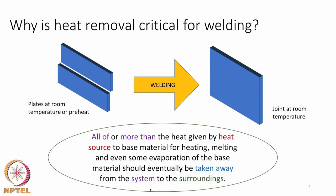We define what is the system and surroundings. The schematic shows a typical TIG setup — the parts shown in red are referred to as the system, basically the weldment, the plates being joined. Everything else is in the surroundings. System is also referred to as domain, and the surroundings are sometimes referred to as the boundary, because boundary conditions are applied about the domain.